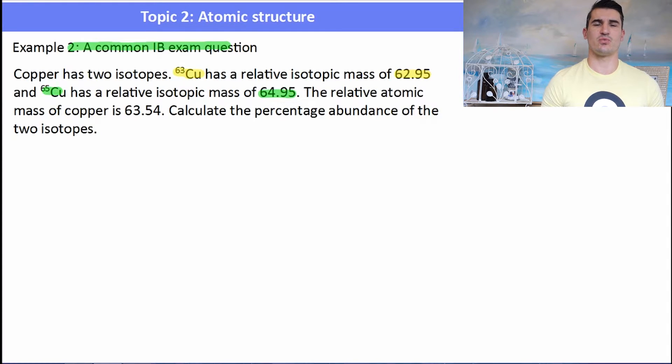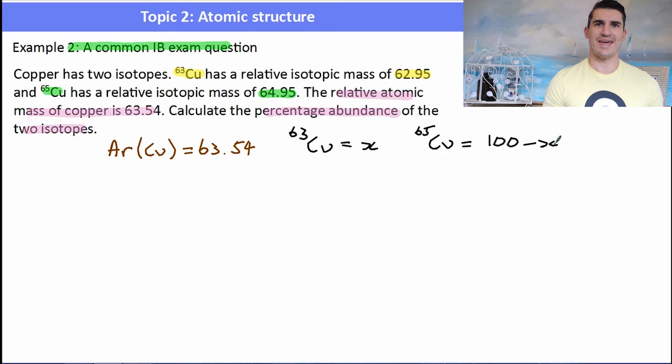Okay, this one here is a common IB exam question where we're asked to do a little bit of maths. So copper has two isotopes, a 63 and a 65. It has a relative isotopic mass of 64.95 for the heavier one and 62.95 for the lighter one. The relative atomic mass of copper is 63.54, and we're asked to calculate the percentage abundances of the two isotopes. So we have to set this one out a little bit differently. We start off with the atomic mass of copper, which is 63.54. And then what we need to do is set up one variable for our percentage. So the lighter isotope is given the symbol X for its percentage abundance, and the heavier one, how would we find that? Well, we would do a hundred take away X, because that would be the leftover.